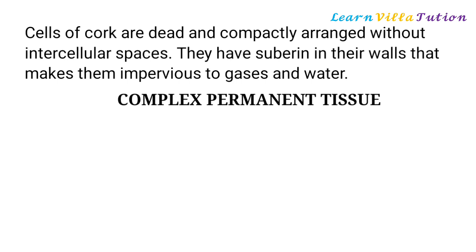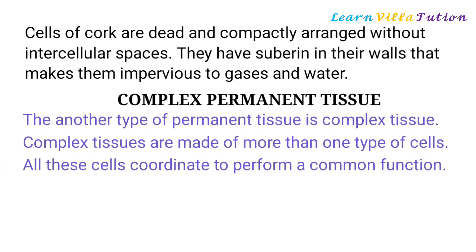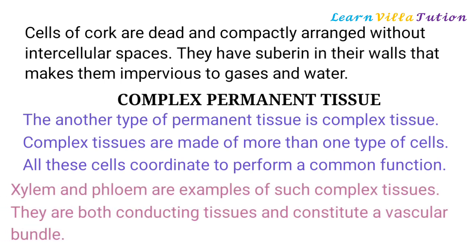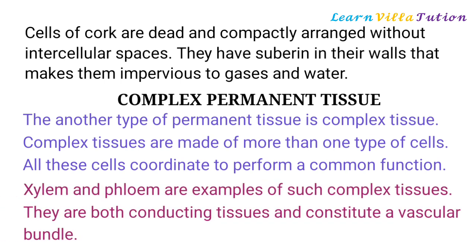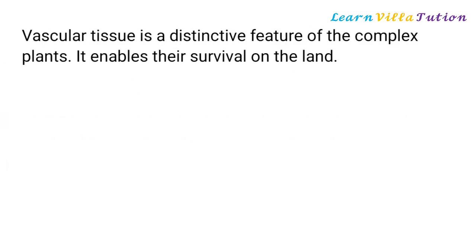The other type of permanent tissue is complex tissue. Complex tissues are made of more than one type of cells, and all these cells coordinate to perform a common function. Xylem and phloem are examples of such complex tissues. They are both conducting tissues and constitute a vascular bundle. Vascular tissue is a distinctive feature of complex plants and enables their survival on land.